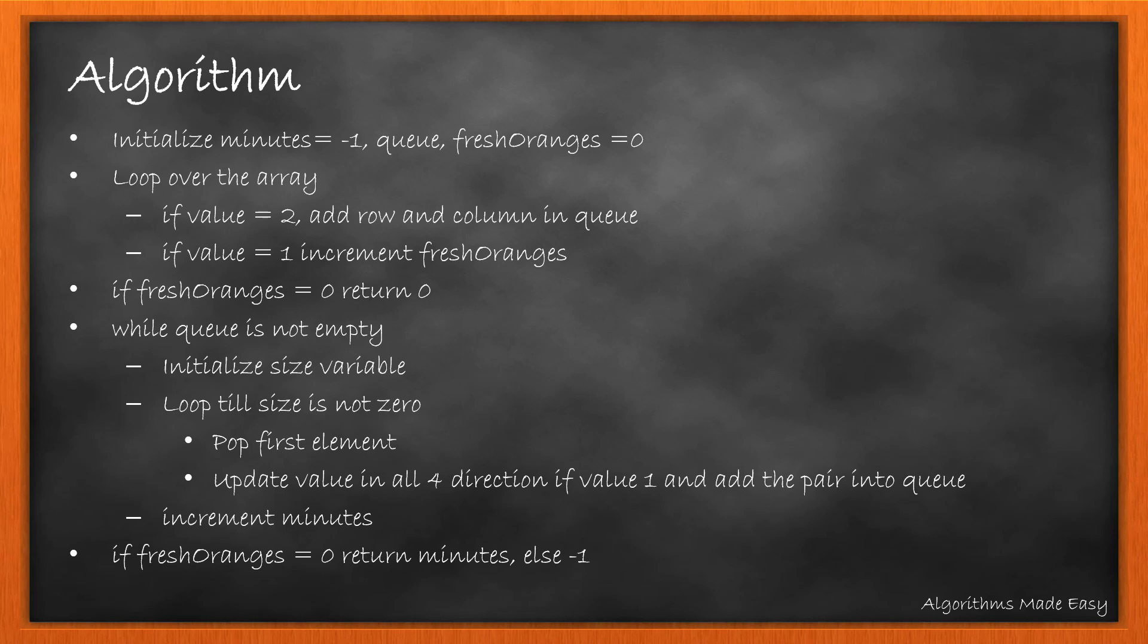We loop till the queue is not empty and then find the size of the queue. We loop till this size is not 0. We pop the first element and update the value in all 4 directions if the value is 1 and add the pair into the queue. At the end of the while loop, we increment minutes.